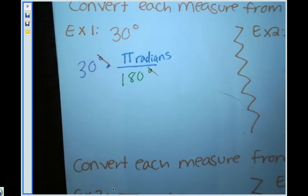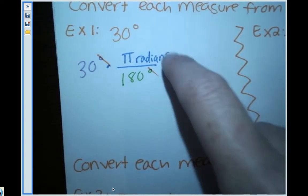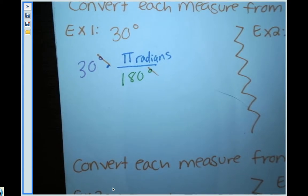Currently, since my degrees canceled out, the units I'm left with are radians. Since we have a fraction, I'm going to change 30 to be a fraction - which 30 is secretly over one.